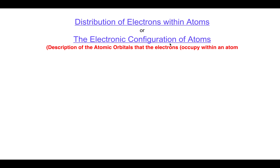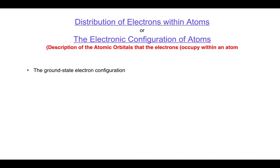The electronic configuration of atoms is actually the description of the atomic orbitals that the electrons occupy within an atom. Here we will be discussing only the ground state electronic configurations, that is the lowest energy states of electrons while they are present inside the atoms.